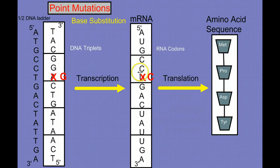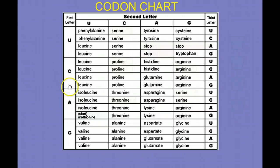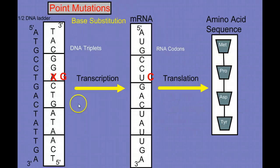And CCU translates to proline, but what about CCC? When we look at our codon chart, we said CCU was proline, but CCC is proline. So sometimes a base substitution has zero effect because of the duplication in the genetic code. So that's what base substitutions look like.